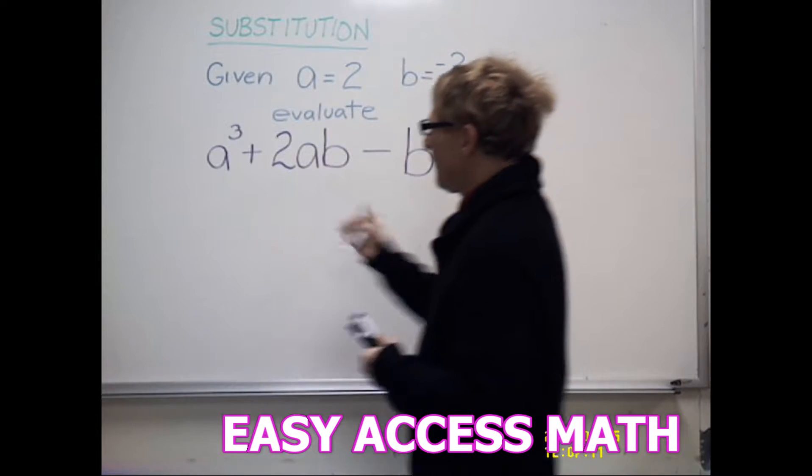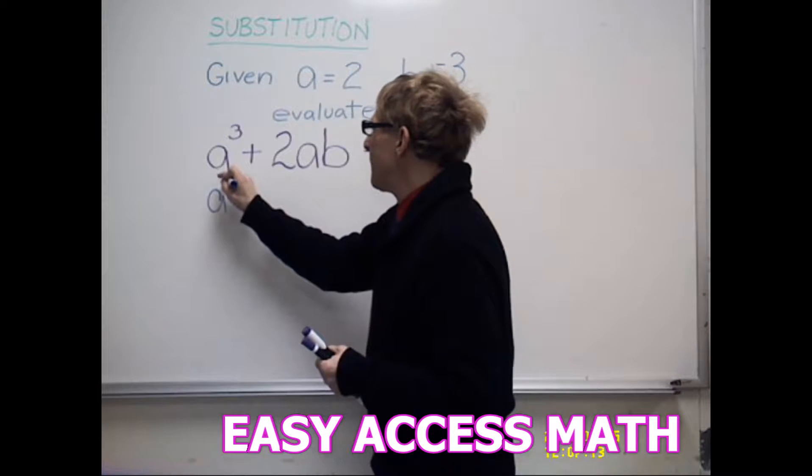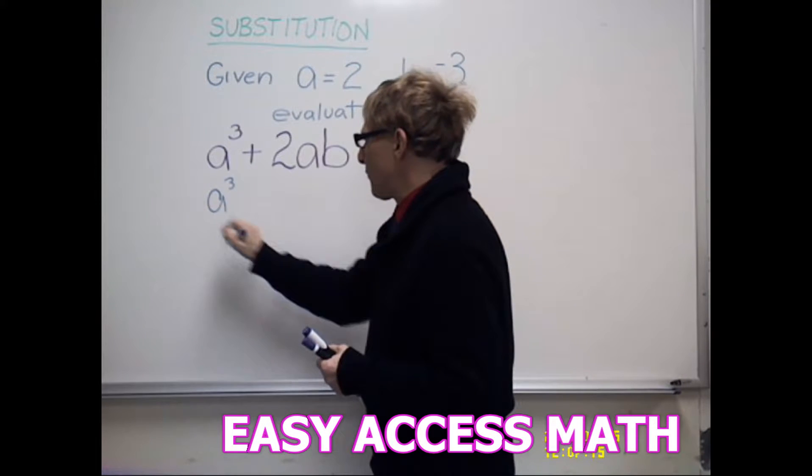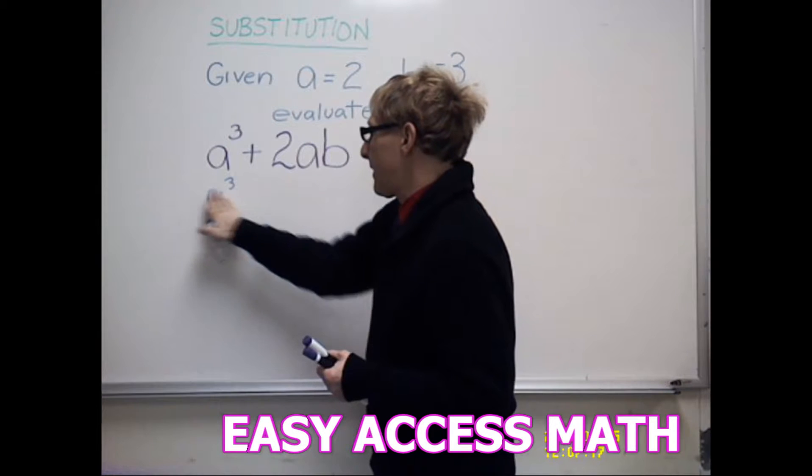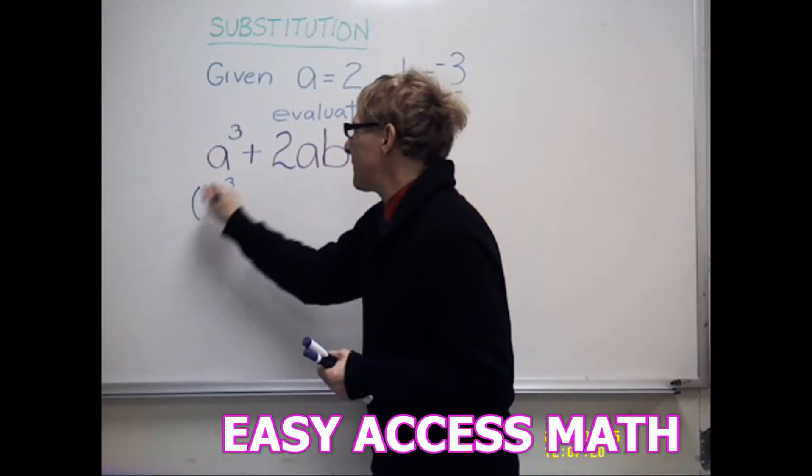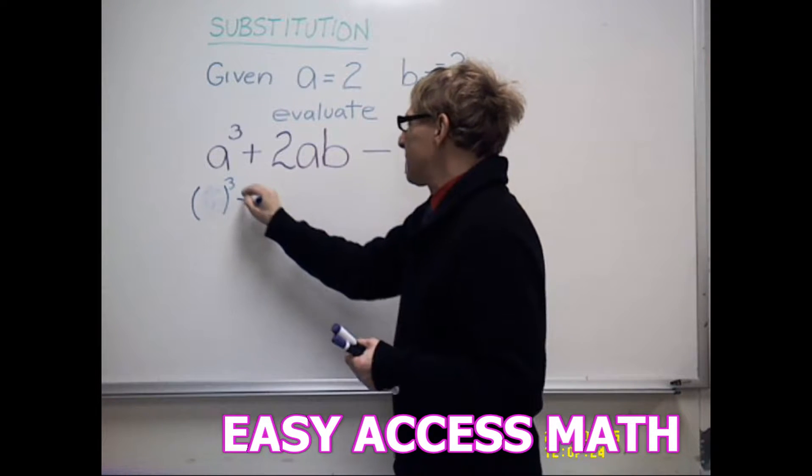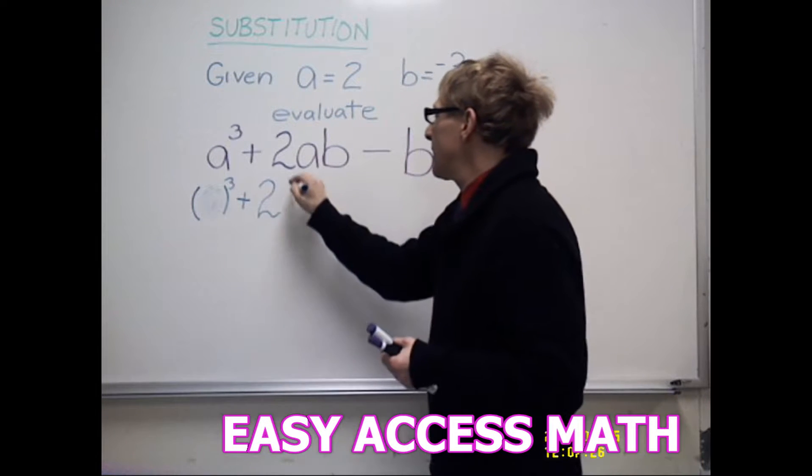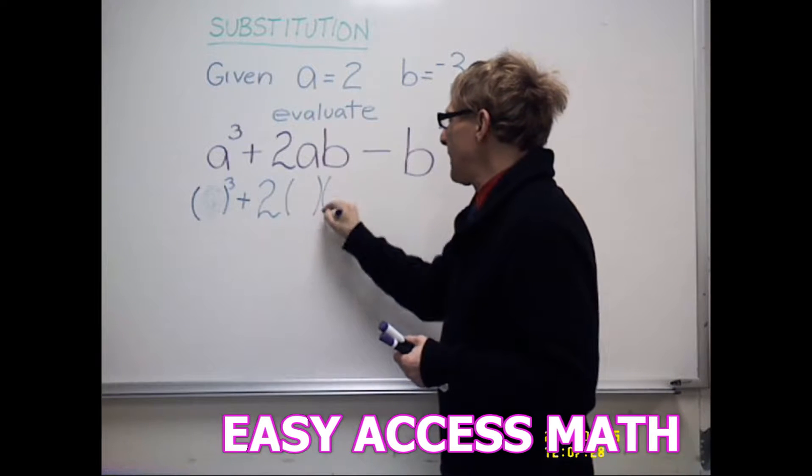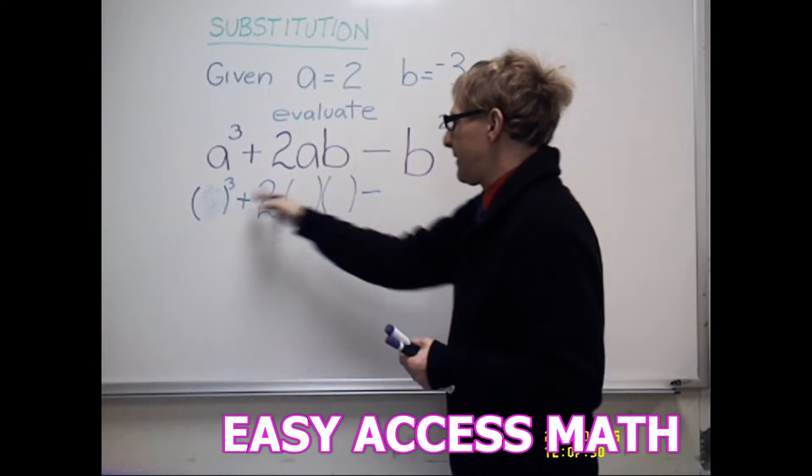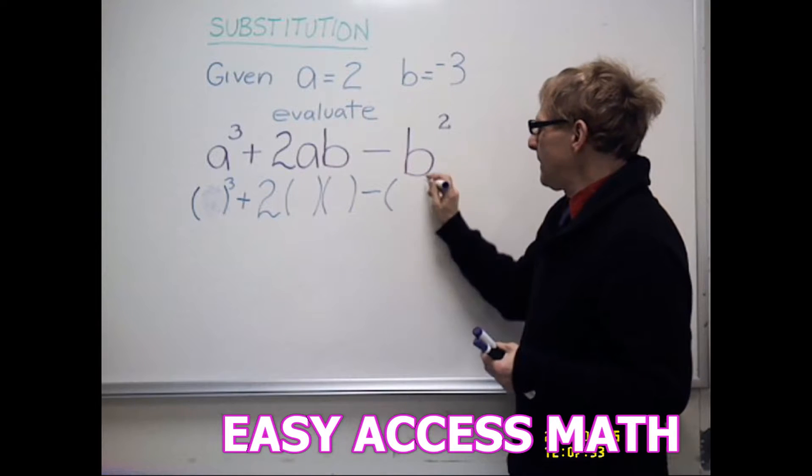We will have the a to the third represented by a parentheses instead of a to the third. Let's put a parentheses there, because we're actually going to put a number in there. Plus 2ab, but I'm putting parentheses in instead of letters, minus b.